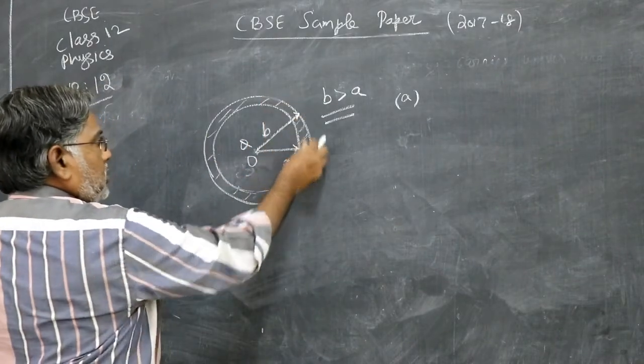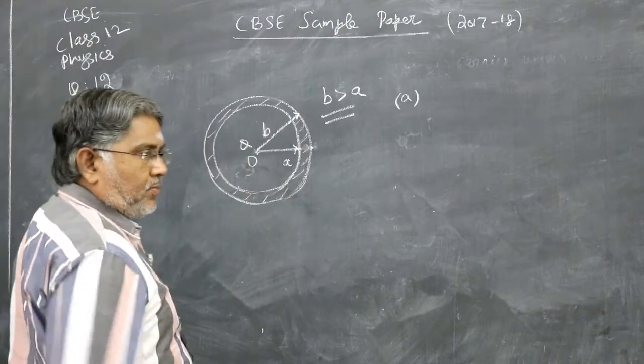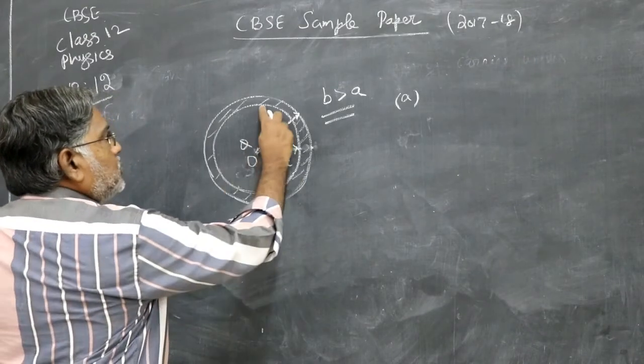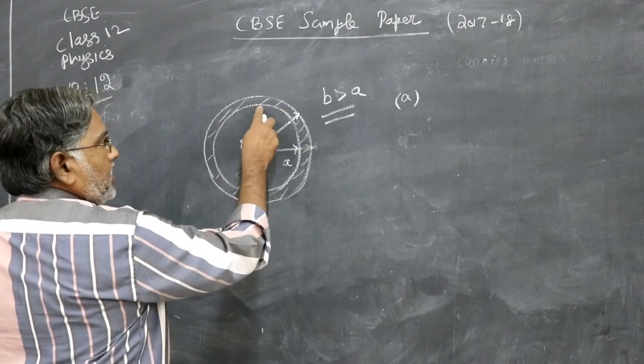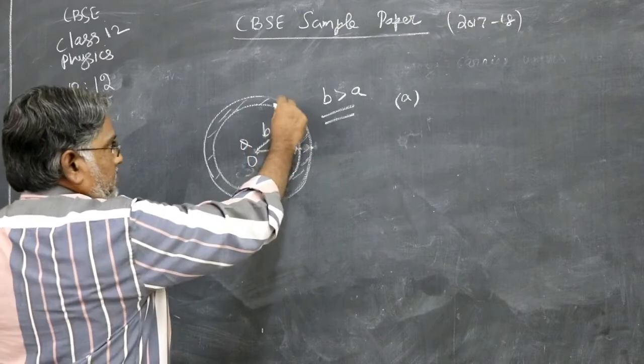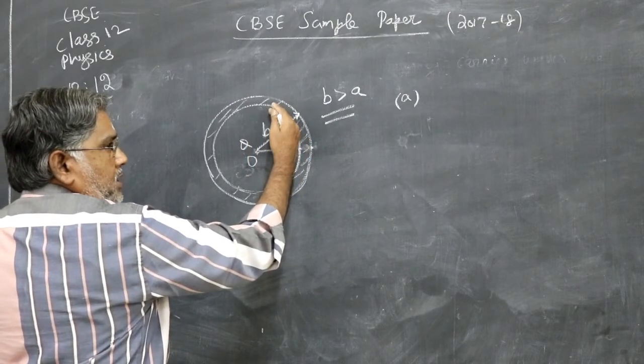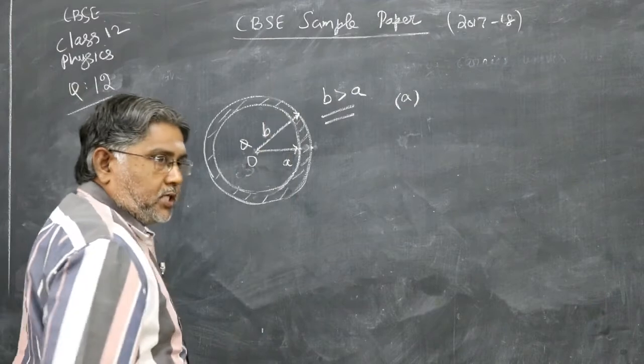Total charge on this spherical shell is zero. This plus Q will induce a minus Q here. And from the conductor, a charge minus Q has come down. So plus Q will go to the top.